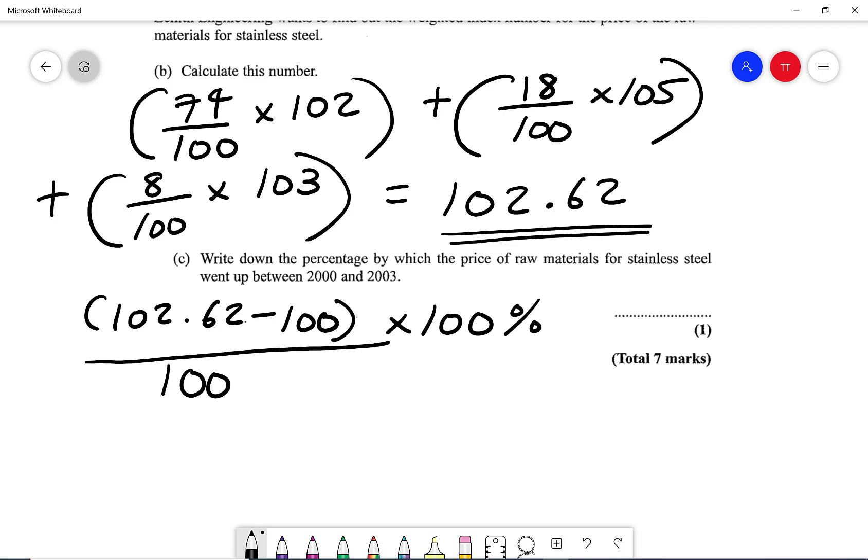So think of this as a percentage change, where you do difference over the original times by 100%. So if you work that on your calculator, you're going to get 2.62%.